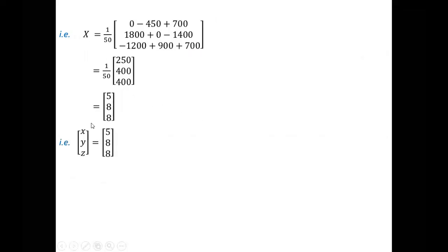We already know X is equal to x, y and z. So ultimately x equals 5, y equals 8, z equals 8. So what we get? We get the cost of the onion is 5 rupees per kg, the cost of wheat is 8 rupees per kg, and rice is 8 rupees per kg. So this is our solution. If you have problems regarding the matrix multiplication, I have other videos also you can check there. Thank you.